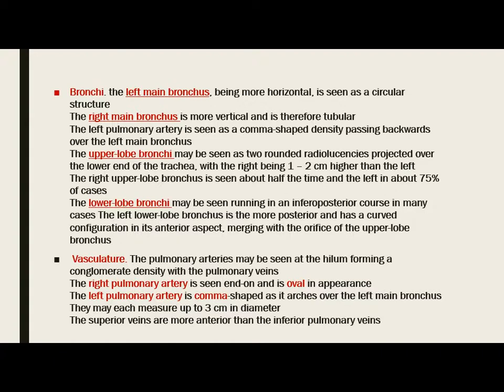The left main bronchus, being more horizontal, is seen as a circular structure, while the right main bronchus is more vertical and is therefore tubular.